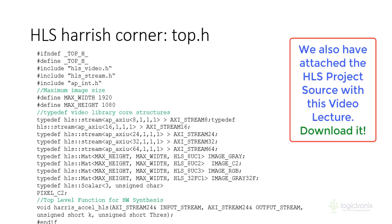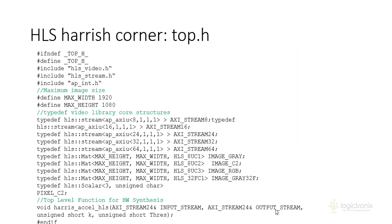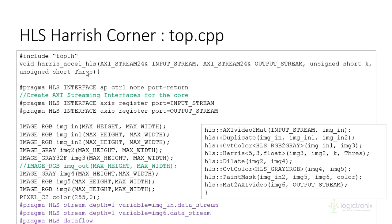Here we have the top.h file for Harris Corner. We have defined some streaming type user-defined variables which will be utilized in the main program — main.cpp or top.cpp. We have defined the maximum height and maximum width, which is the resolution. The function xf_harris_accel is defined for acceleration, taking a 24-bit (8-bit, 3-channel) input stream, an output stream, a k parameter, and a threshold.